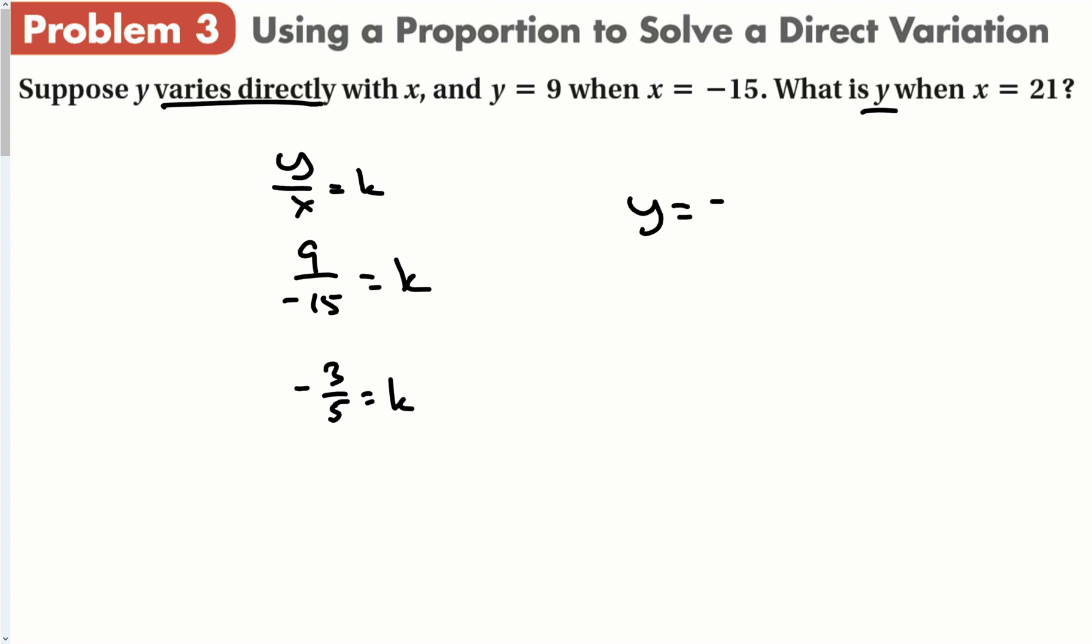So I know my constant is negative 3 over 5, and I just plug in 21. And I get that y is going to equal, not a nice number here, so we'll turn it to a decimal, negative 12.6. Or if we left it as a fraction, 63 over 5.